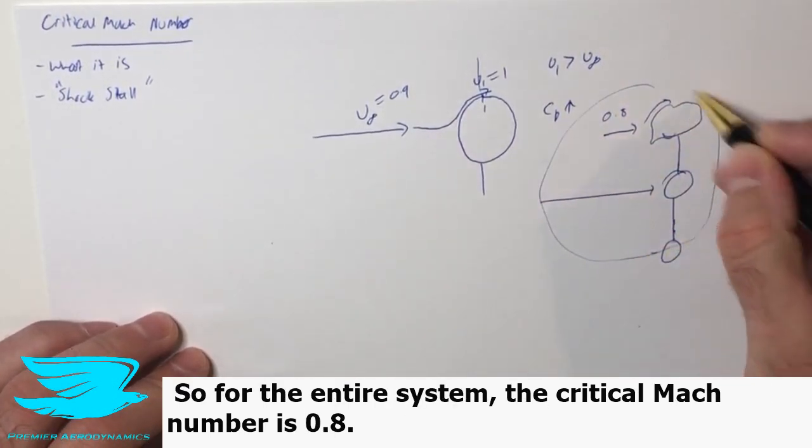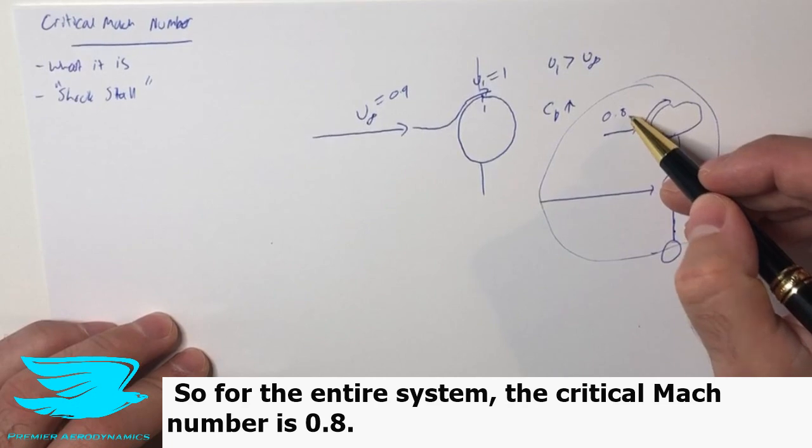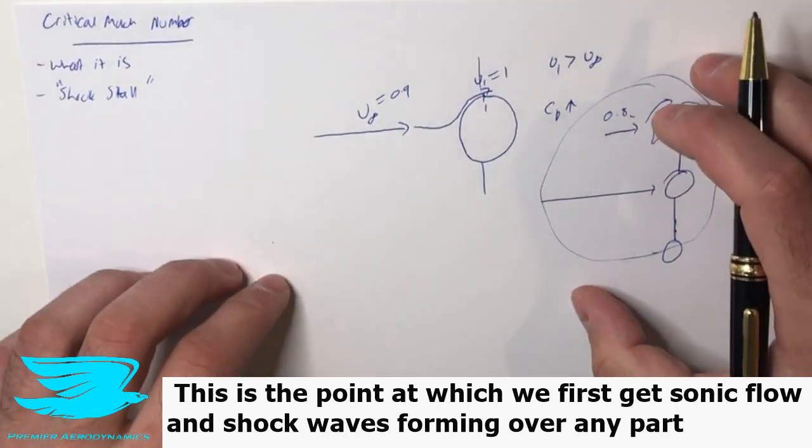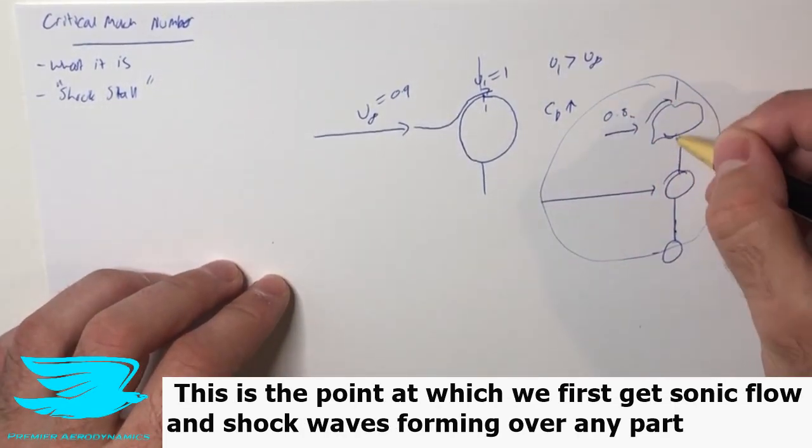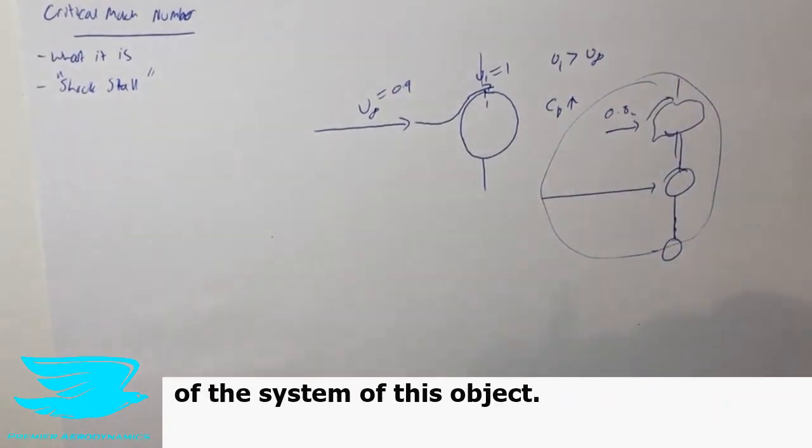So for the entire system, the critical Mach number is 0.8. This is the point at which we first get sonic flow and shock waves forming over any part of the system of this object.